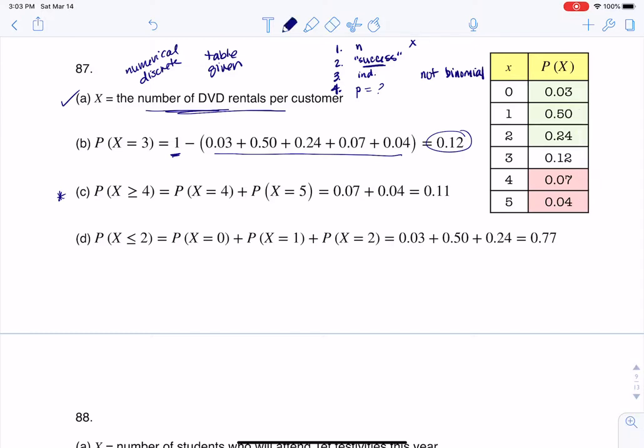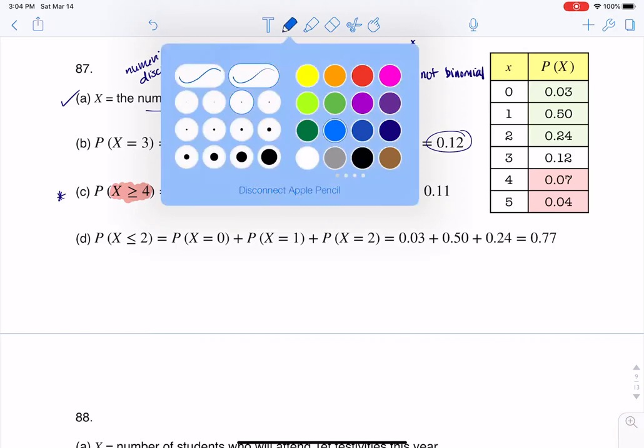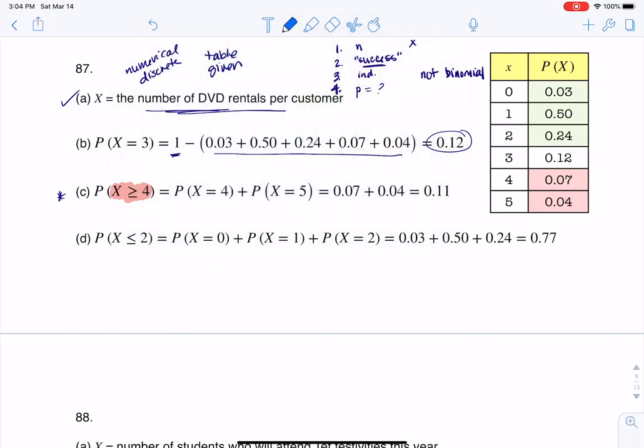And I can start to answer C, which said, find the probability that a customer rents at least four DVDs. So let's start inside the parentheses with x greater than or equal to four and see which numbers we want to include. So I'll start here. Is zero greater than or equal to four? Nope. So I don't want to include it. Is one greater than or equal to four? Nope.